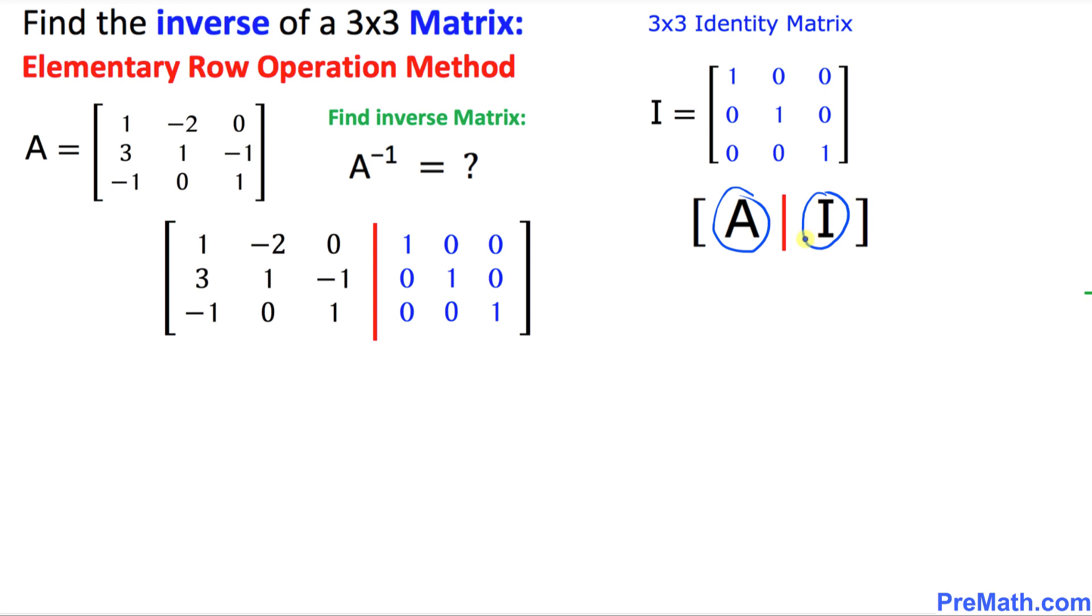and the right-hand side matrix I, identity matrix. Now we are going to perform these elementary row operations so that this A matrix is going to become an I. So our job is making sure that this A matrix becomes an identity matrix, then automatically this other matrix is going to become A inverse or A power negative 1.